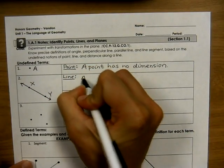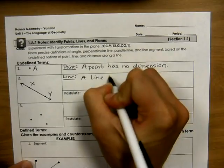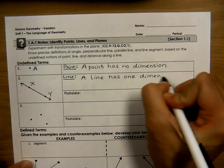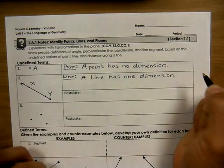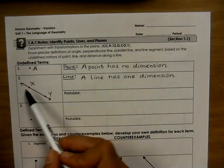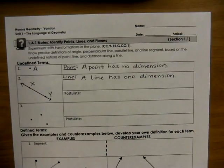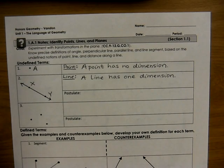And a line has one dimension. It extends forever and ever, and that's why we add these arrows to show that it extends forever in one direction, or sorry, in both directions.